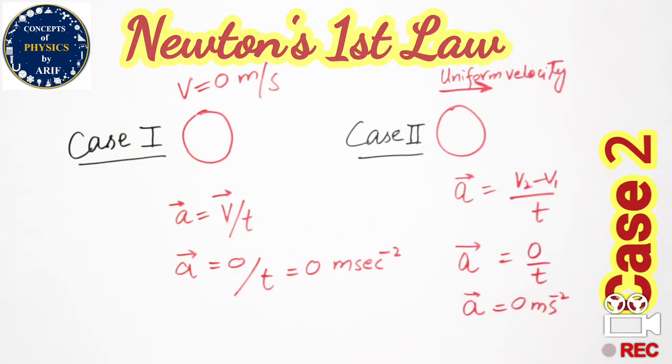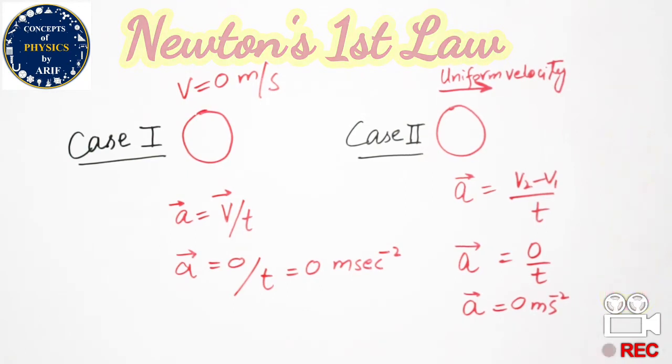This is the First Law of Motion, also called the Law of Inertia. When a body is moving with uniform velocity, it has inertia that resists stopping. But in our explanation, we can see that when there is no change in velocity, the acceleration will be zero.